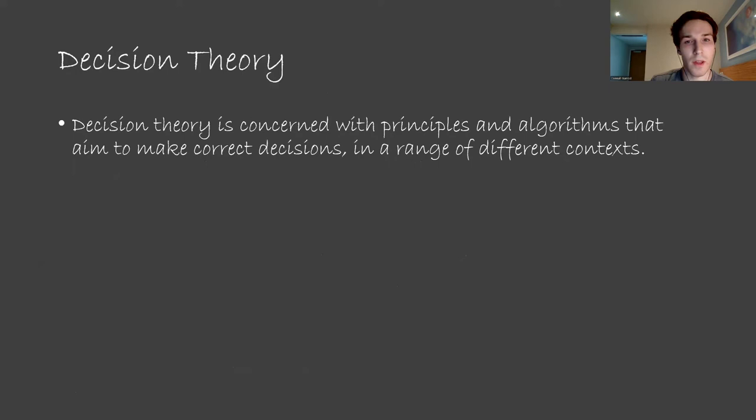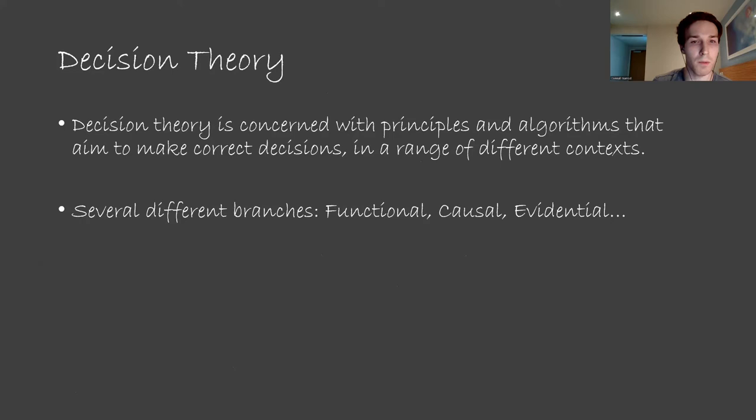Before we finish this video, I'll talk briefly about decision theory, which relates to lots of different agent foundations work, particularly that done at the Machine Intelligence Research Institute. Decision theory is concerned with principles or algorithms that aim to make correct decisions within some environment. These decisions can be made in the presence of other agents or with other aspects of the environment being unknown. It's a very general framework for approaching decisions. There are several different branches of decision theory, and each one has a different method of approaching problems. Some might be concerned about how different agents make decisions, like how humans make decisions. And others might be concerned with selecting between different processes to make optimal decisions.